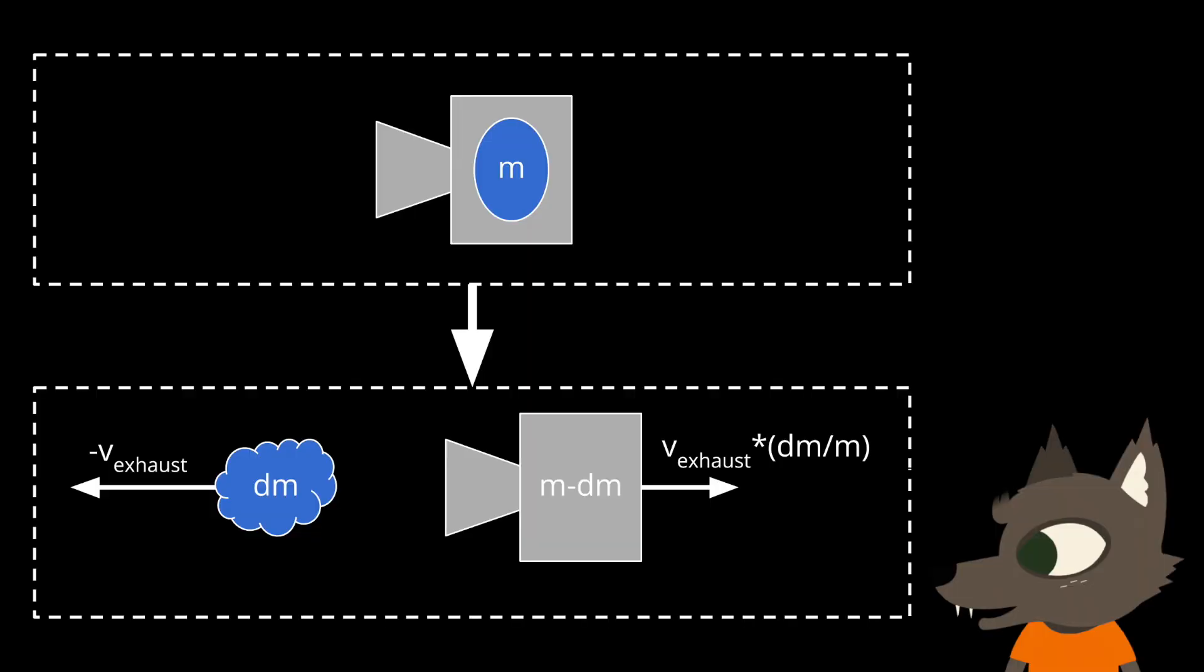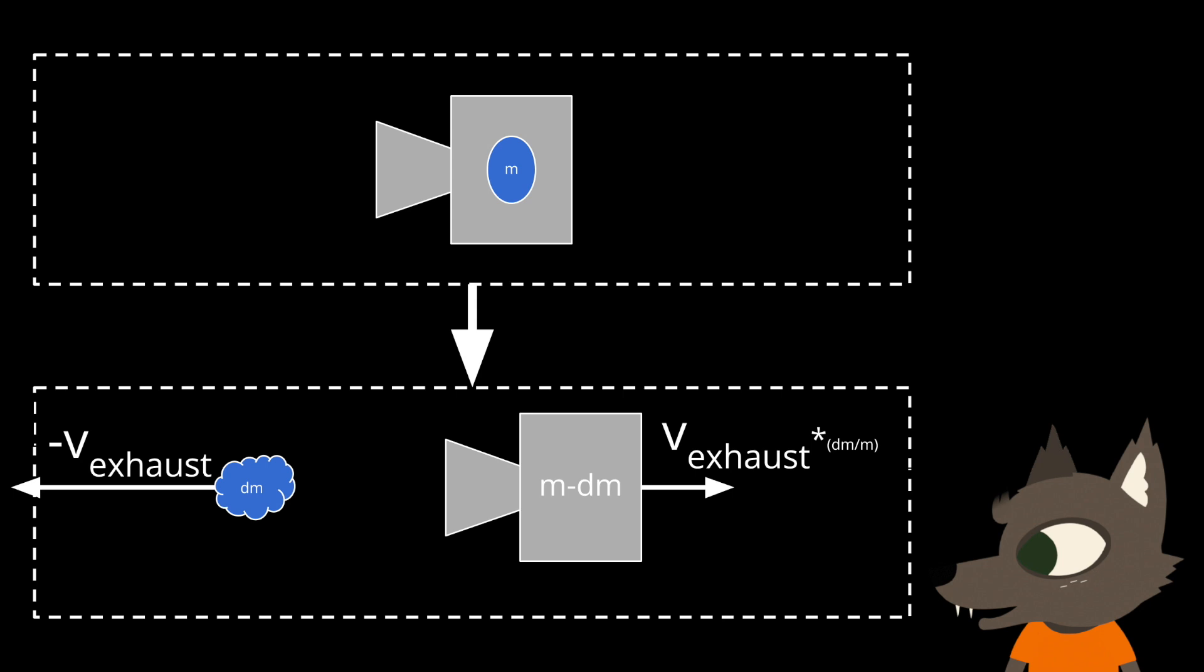What this means for us is that we want a thruster that can provide our delta V using the smallest mass of propellant possible. According to conservation of momentum, if we want to use the least mass of propellant to get our delta V, we need to fire it backwards as fast as possible. This speed of the propellant coming out of the thruster is called the exhaust velocity, and it tells us how efficient our thruster is, kind of like miles per gallon on a car.